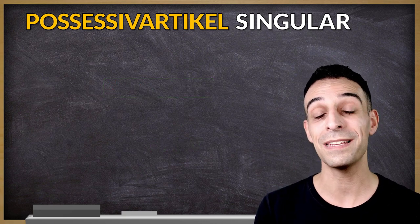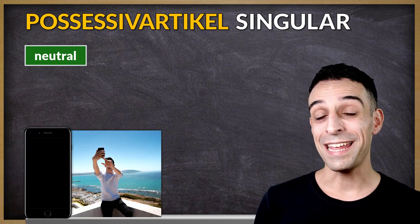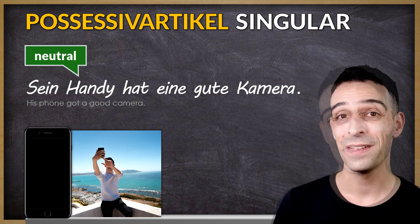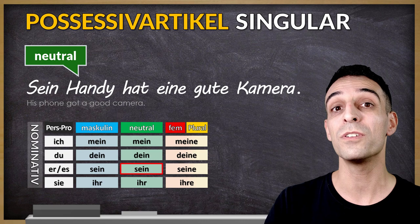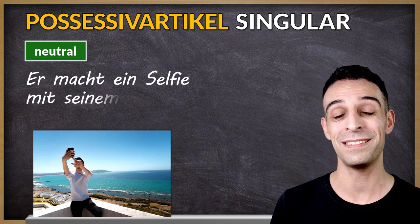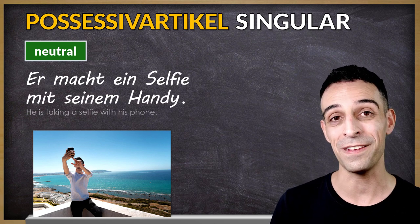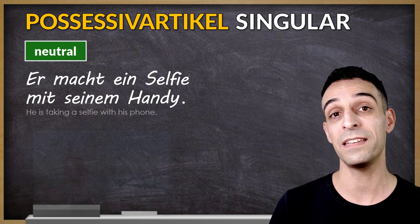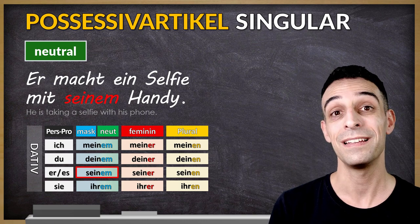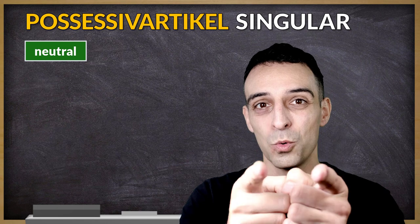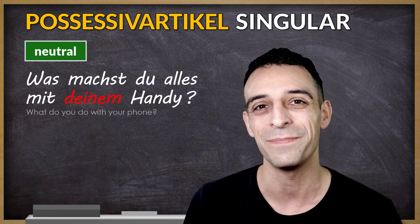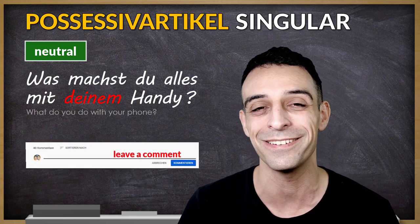My next example is neutral. Sein Handy hat eine gute Kamera. Handy is the subject, so we use nominative case: sein. Er macht ein Selfie mit seinem Handy. In this sentence, I use the preposition mit, and this means I have to use dative case: seinem. Und was machst du alles mit deinem Handy? This is also a homework question you can answer in the comment section.